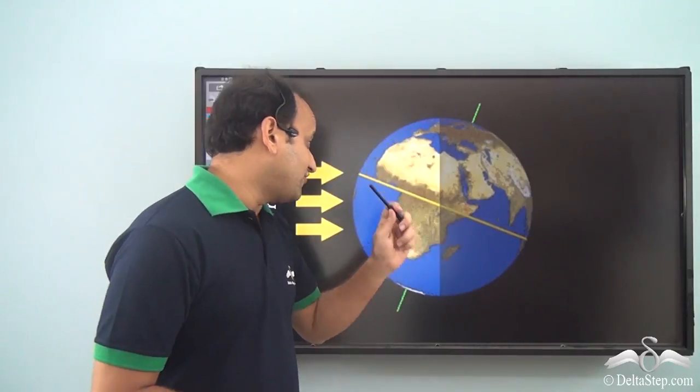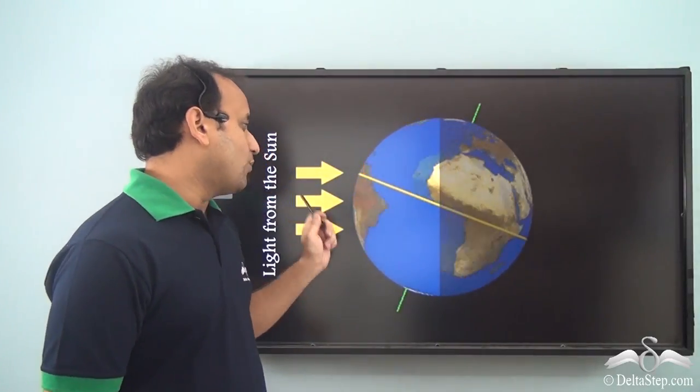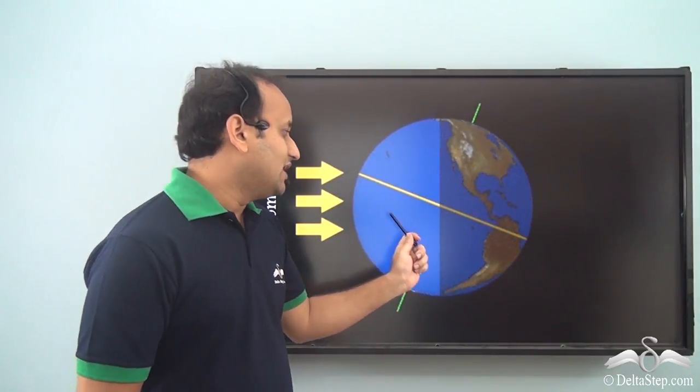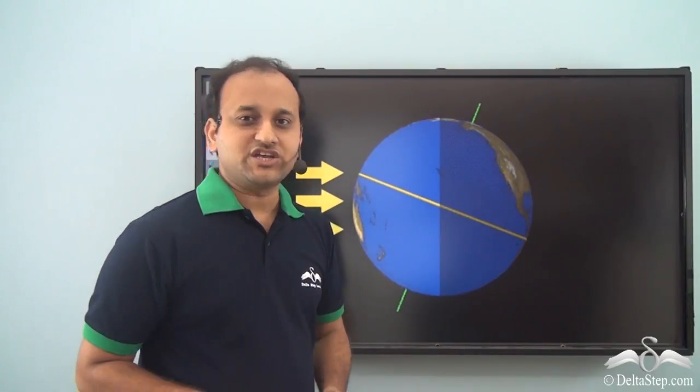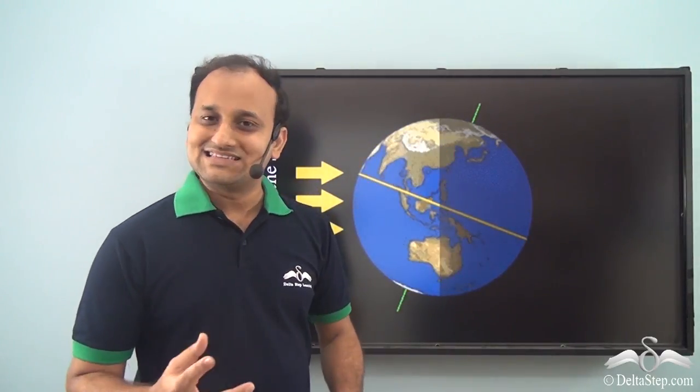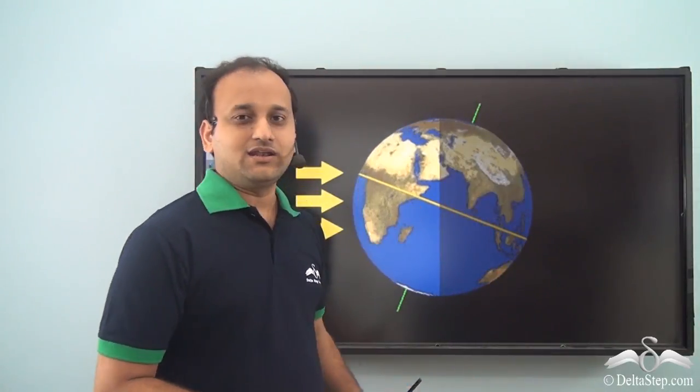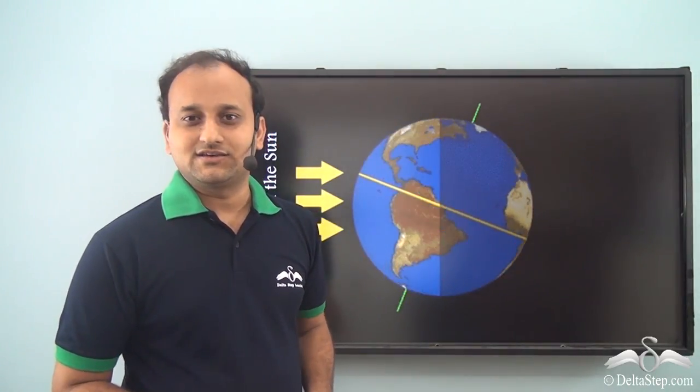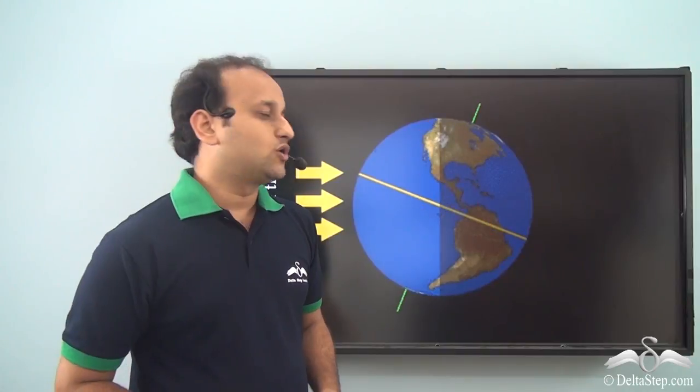Half of the Earth is getting the sunlight while half of it is not getting it, because half of the Earth is facing the Sun while the other half is in the opposite direction. It's not getting any sunlight, and that is why there is day and night. The part facing the Sun will have day and the part opposite to that of the Sun will have night. Let's understand more closely.